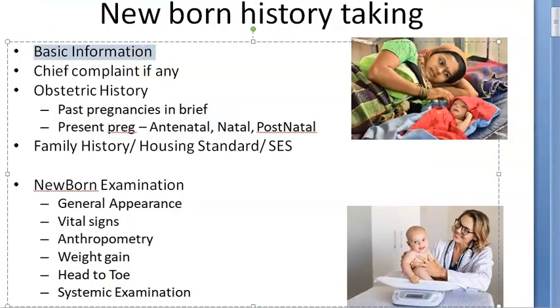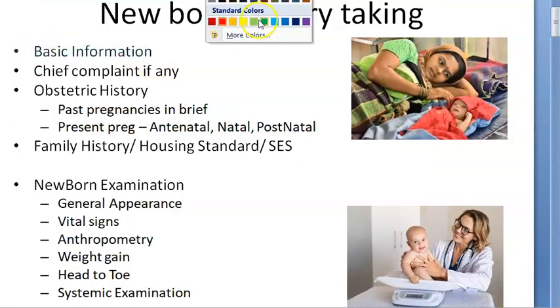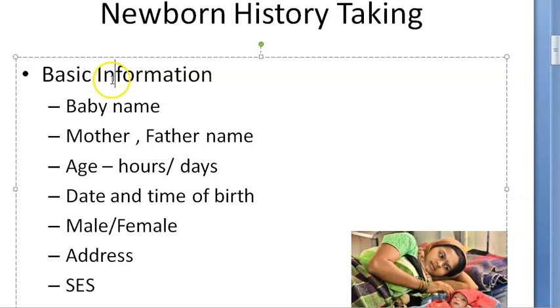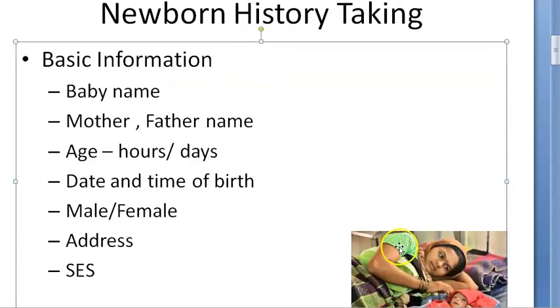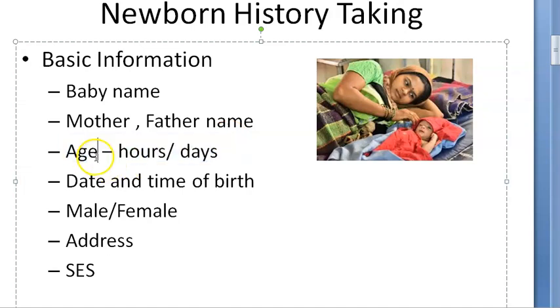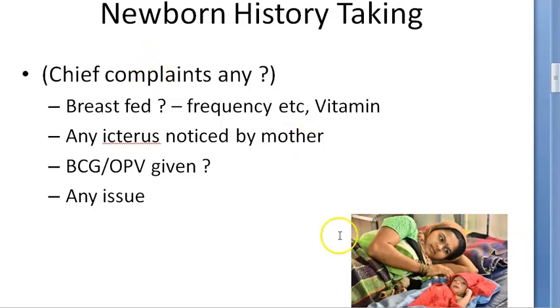Let us start off with this one now. Basic information that we will collect. So basic information means what will you ask: the name of the baby if it is there, mother's name, father's name, the age of the baby, age in hours or days, exactly date and time that it was born. Mother's age also you can collect, we will come to that. Then whether it is a male or female child and then address and their socioeconomic status.